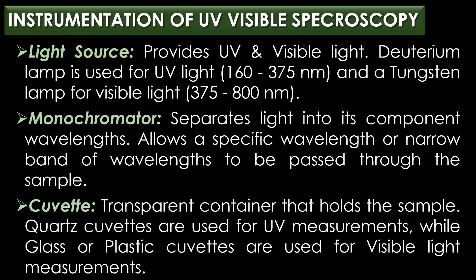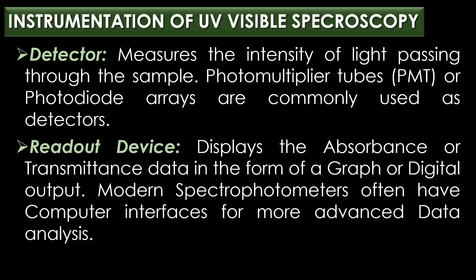Third, a cuvette is a transparent container that holds the sample. Quartz cuvettes are used for UV measurements while glass or plastic cuvettes are used for visible light measurements. Fourth, the detector measures the intensity of light passing through the sample; photomultiplier tubes or photodiode arrays are commonly used as detectors.